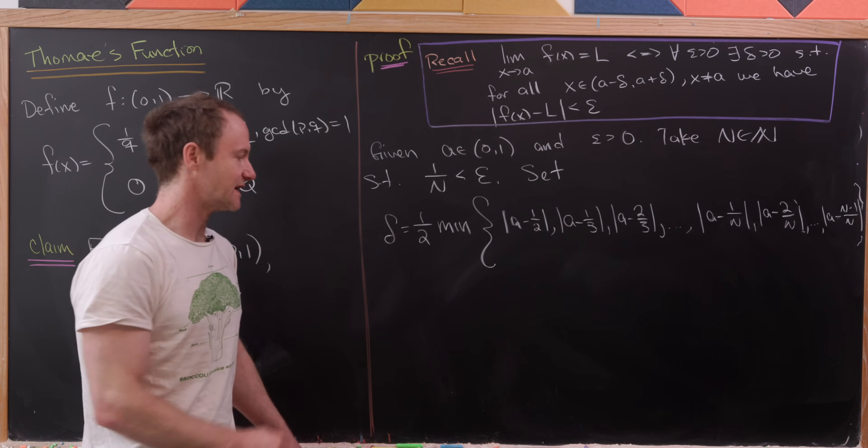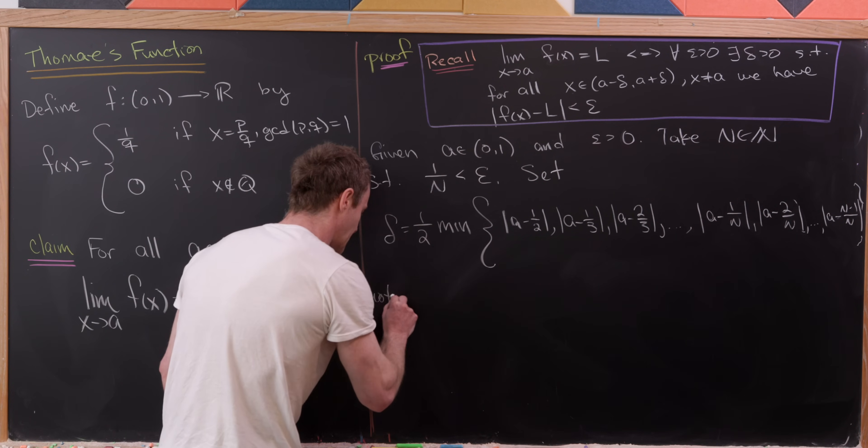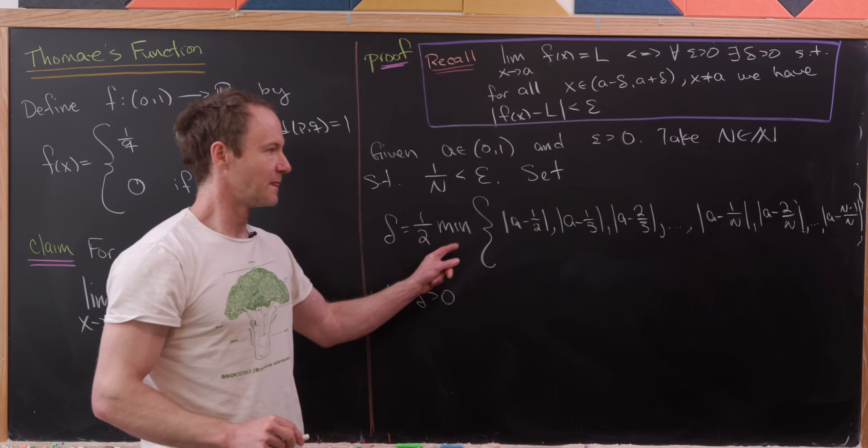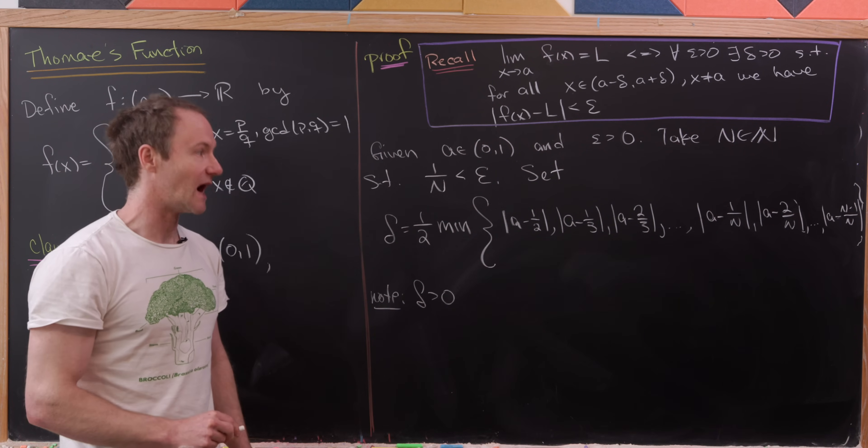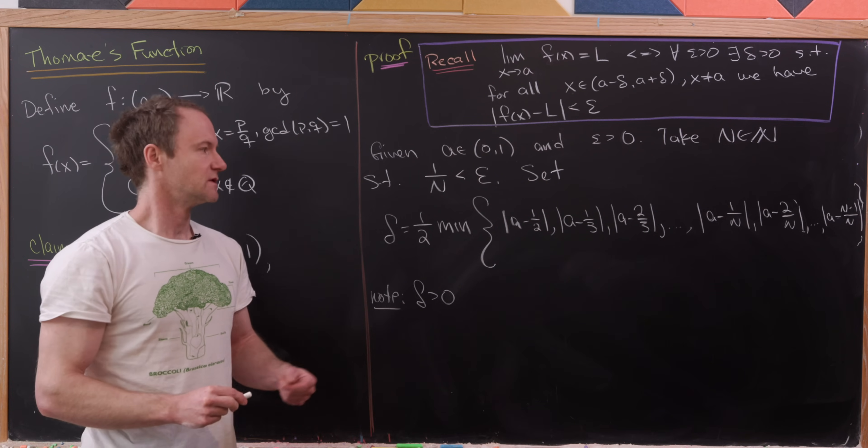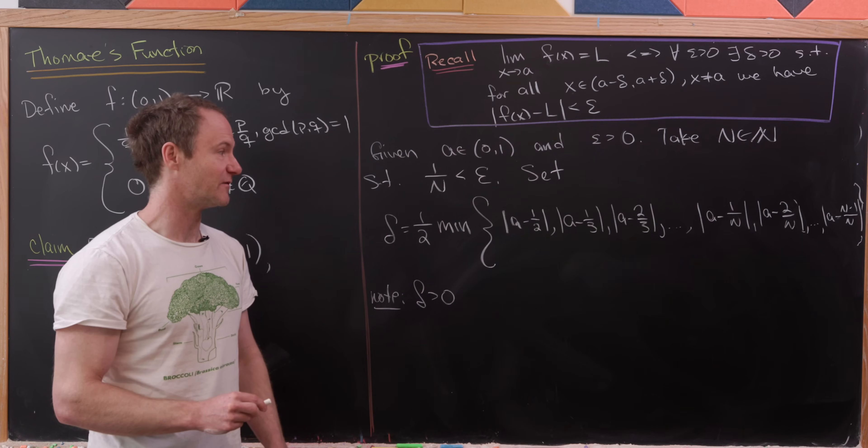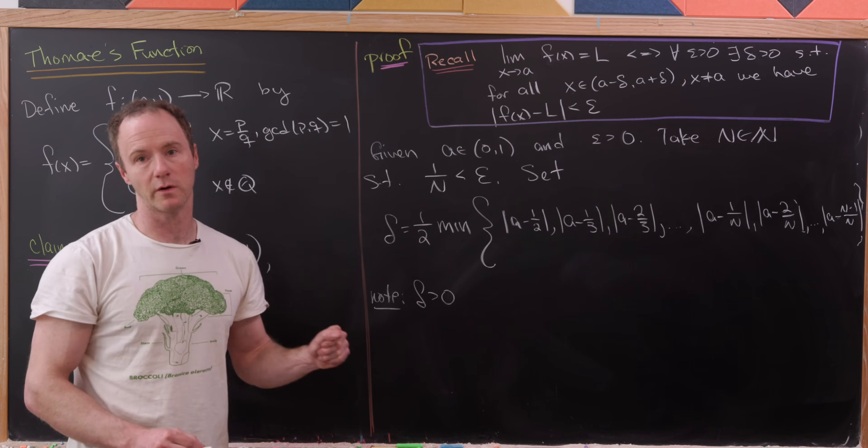So notice that delta is bigger than zero. And that's because delta is the minimum of a finite number of positive numbers. And so since this is a finite set, and we're taking the minimum of a finite set of positive numbers, then we're okay.